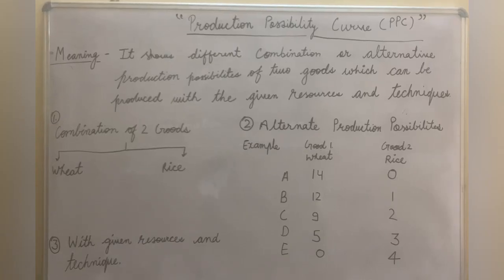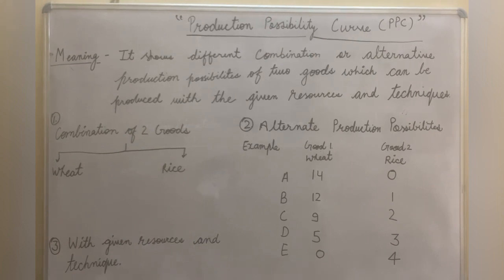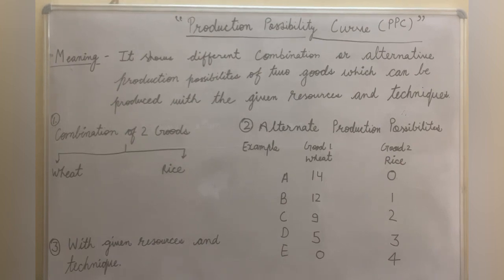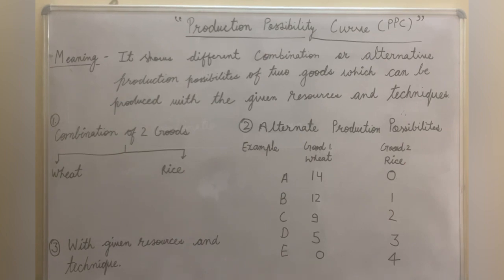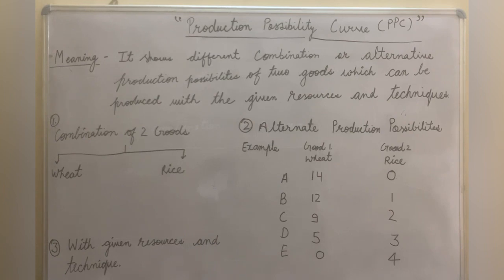Hi guys, this is Sunali Vijay. Today we will understand what is Production Possibility Curve, or PPC. PPC is shown from the perspective of the producer. It shows different combinations or alternative production possibilities of two goods which can be produced with the given resources and techniques. The producer is taking two goods — wheat and rice — with the given resources and techniques, which should be constant.